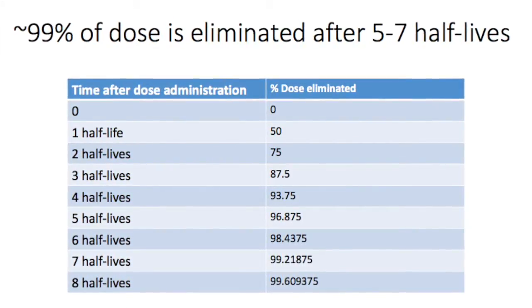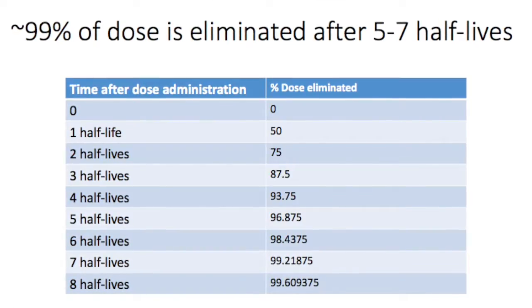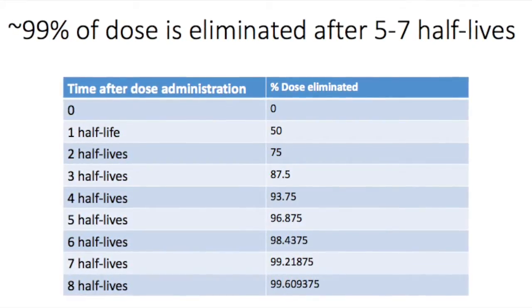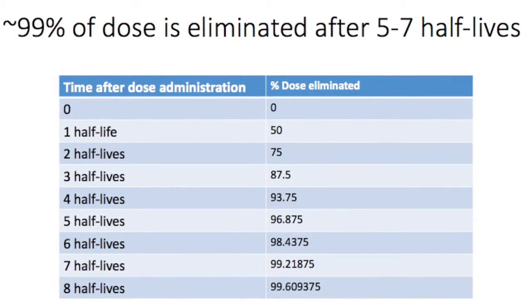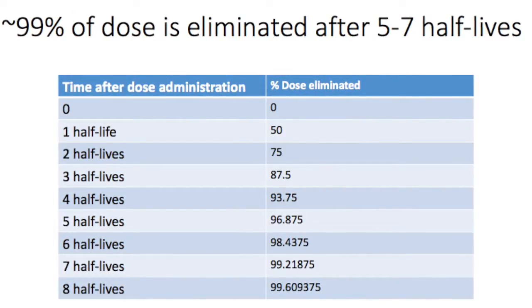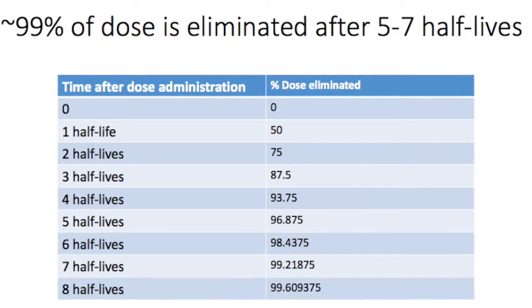So for a drug with a short half-life, like one hour, even if the drug is given twice a day, there will be minimal accumulation. However, if the drug has a longer half-life, say eight hours, twice daily administration will result in significant accumulation.